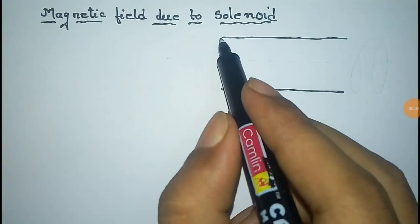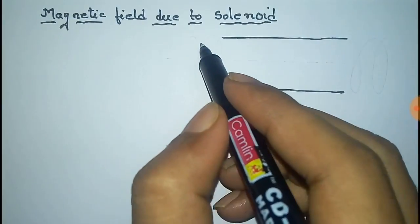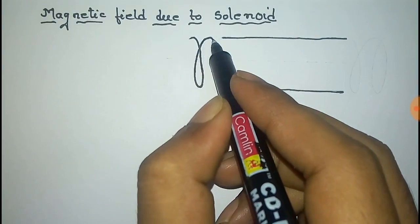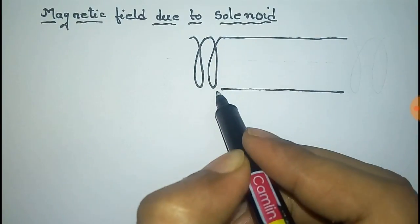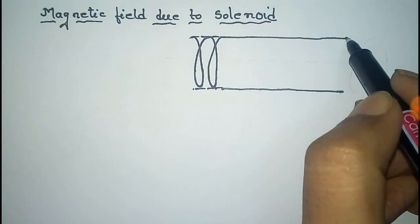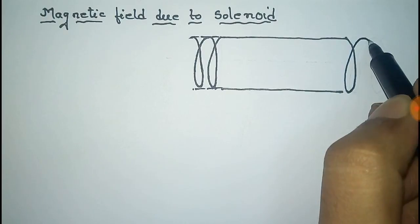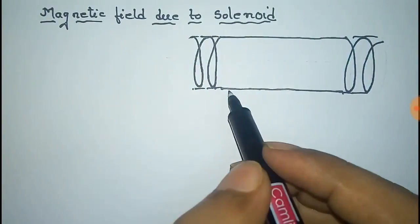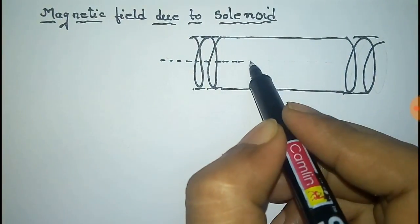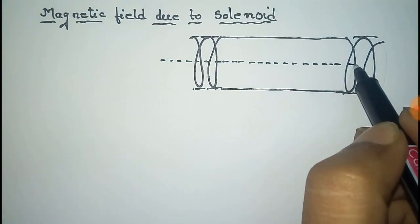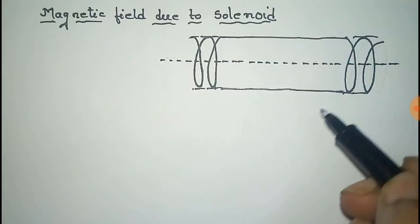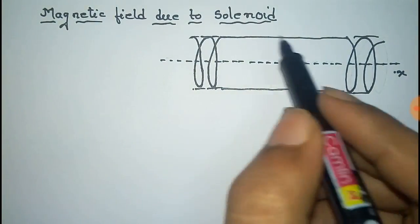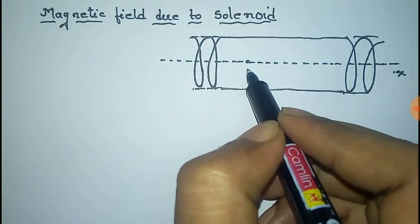We have to find the magnetic field due to a solenoid. This is the cylinder and wire is wound over it. This is the wire. This system makes a solenoid and this is the axis of the cylinder or the solenoid, and the axis is along the x-axis. We have to find the magnetic field at any axial point of the solenoid.